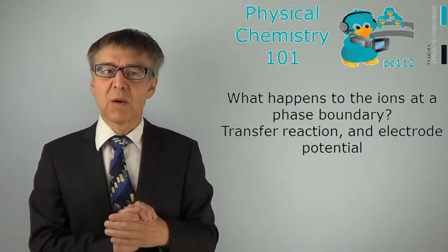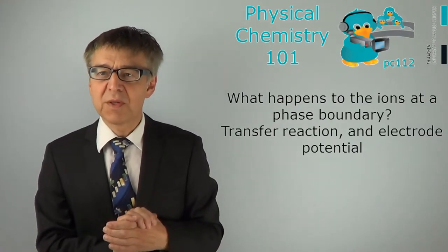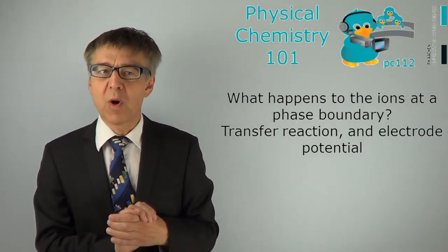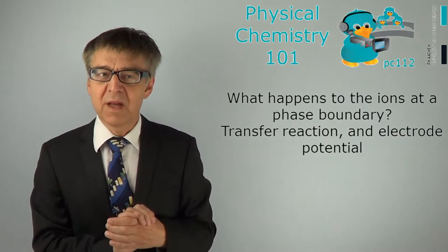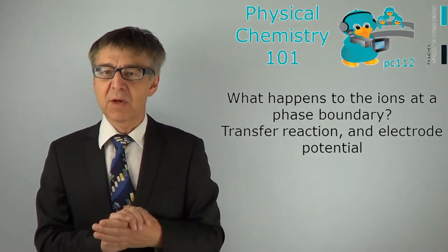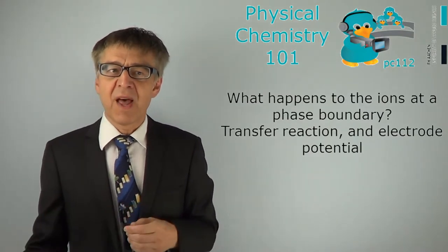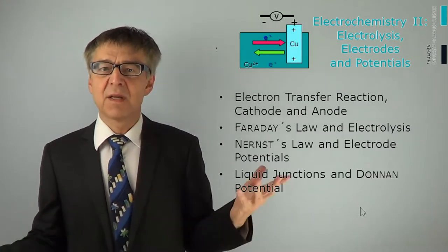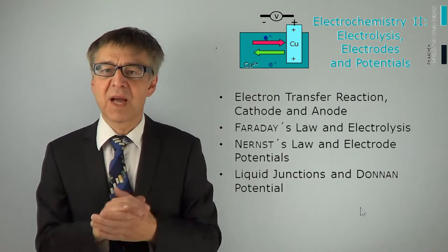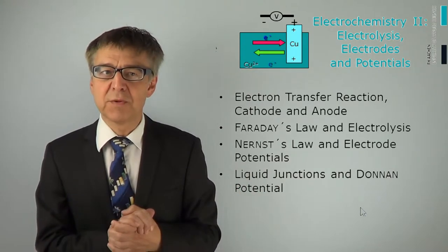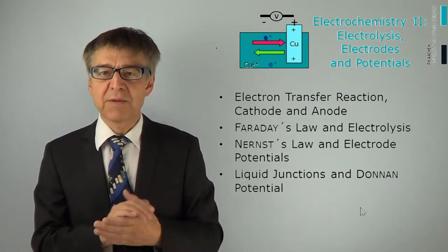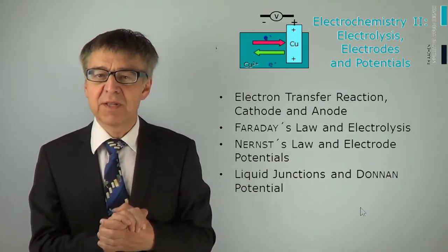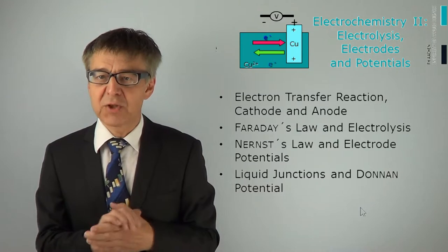Ladies and gentlemen, I would like to welcome you to our course Physical Chemistry 101. My name is Dr. Lauf, and our topic today is Electrochemistry Part 2 – How to Calculate Electrode Current and Potential.